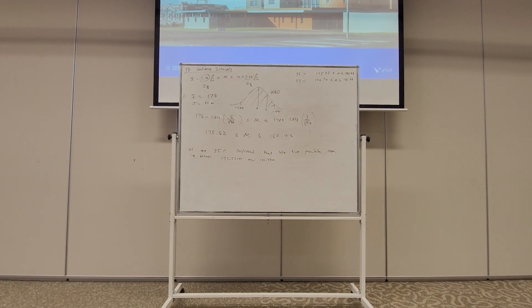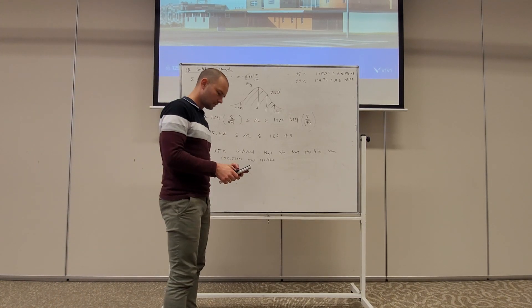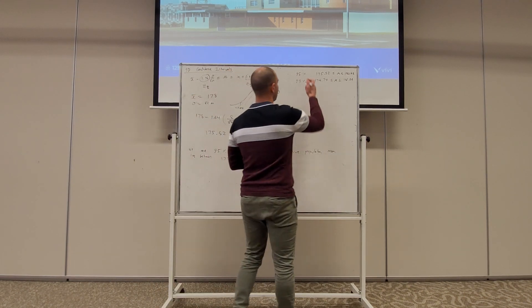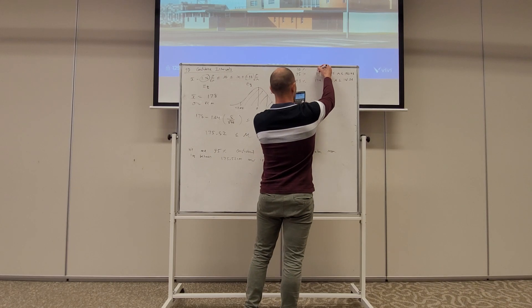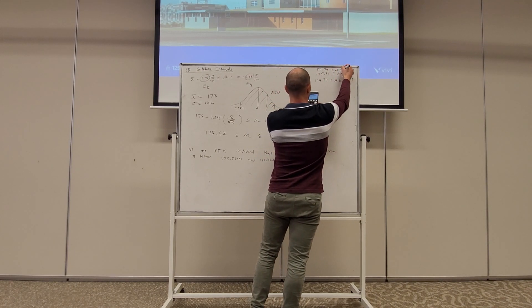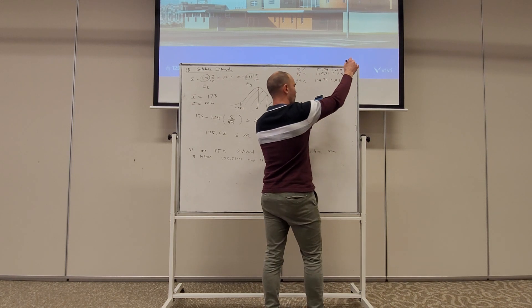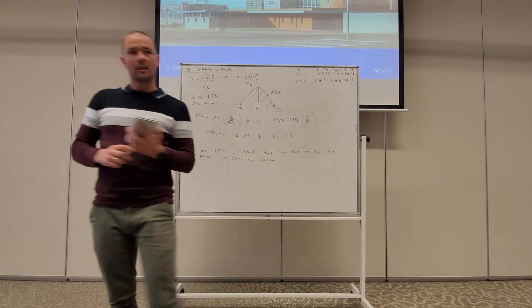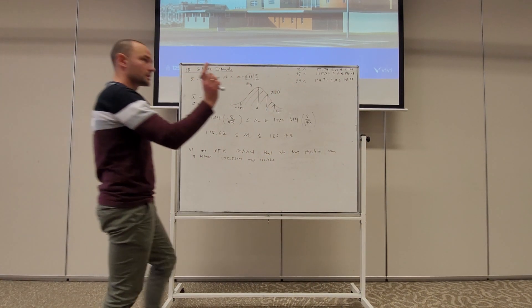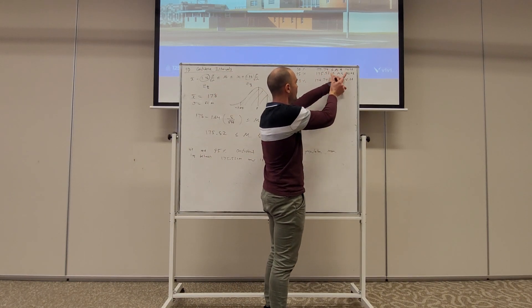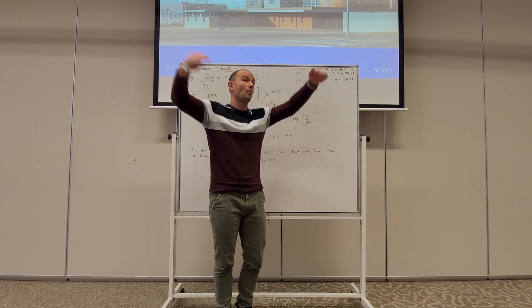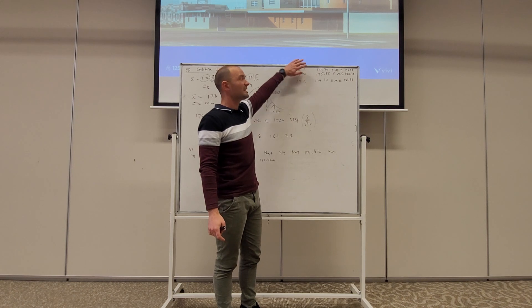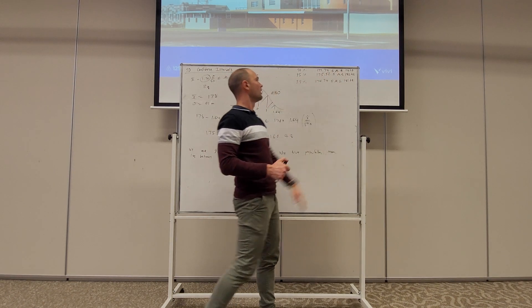Now, when we evaluate that, look at this level of confidence. 177.74 to 178.26. Isn't that fascinating? The less confidence we claim, the smaller the window becomes. The more confidence we claim, like if we want a higher level of confidence, well, we're going to stretch that window right out to guarantee that level of confidence. But 90% confidence, there's 10% error, and so we can be more precise.